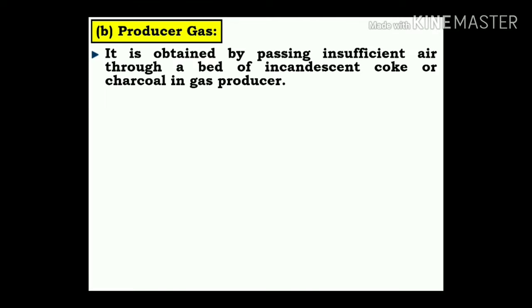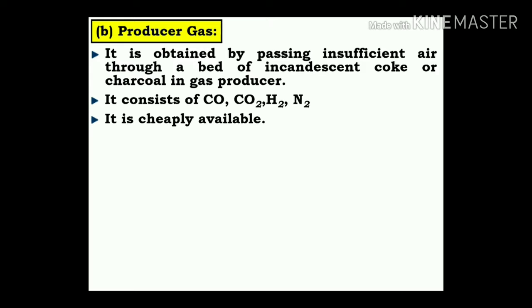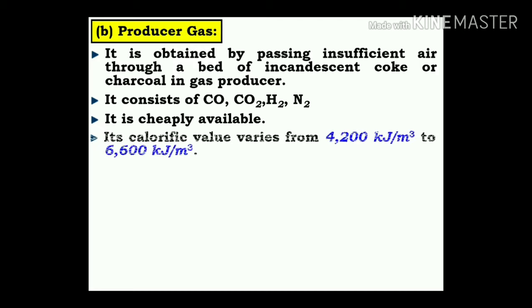Producer gas: it is obtained by passing insufficient air through a bed of incandescent coke or charcoal in a gas producer. It consists of carbon monoxide, carbon dioxide, hydrogen, and nitrogen. It is cheaply available. Its calorific value varies from 4,200 kJ/m³ to 6,600 kJ/m³.